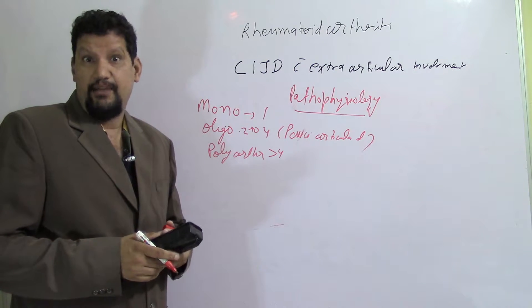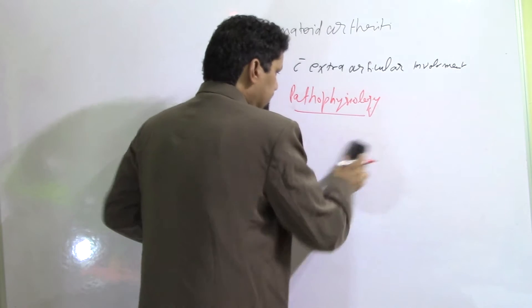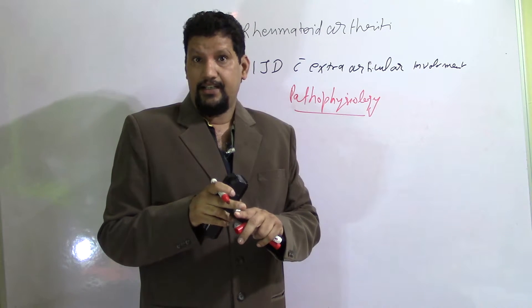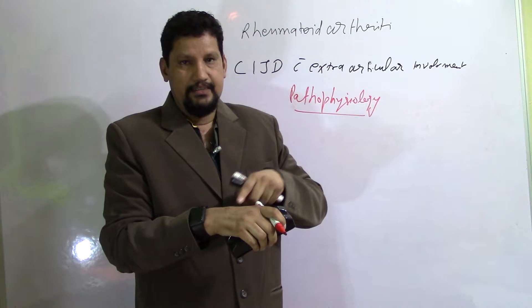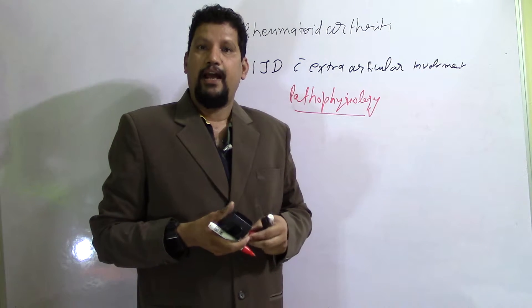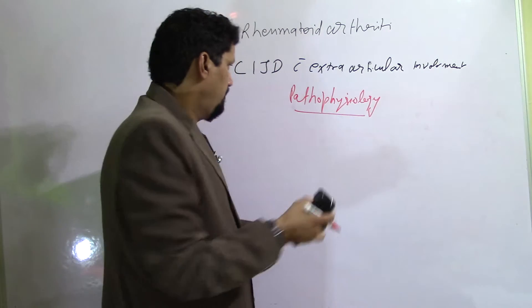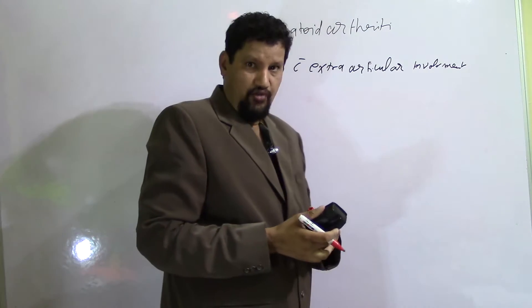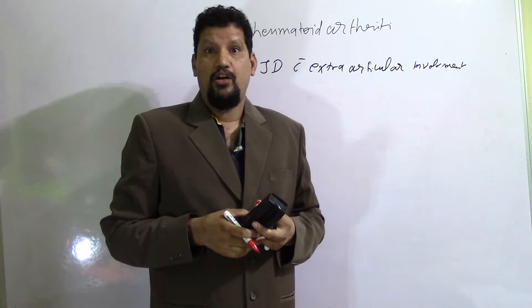The joint involvement is symmetrical. It starts in the small joints of the hand, especially the metacarpophalangeal joint, then spreads to proximal interphalangeal joints, wrist, elbow, knee, ankle, metatarsophalangeal joints, interphalangeal joints of the foot, and then the hip and shoulder. Cervical spine joints may also be involved, but sacroiliac and other spinal joints are spared.